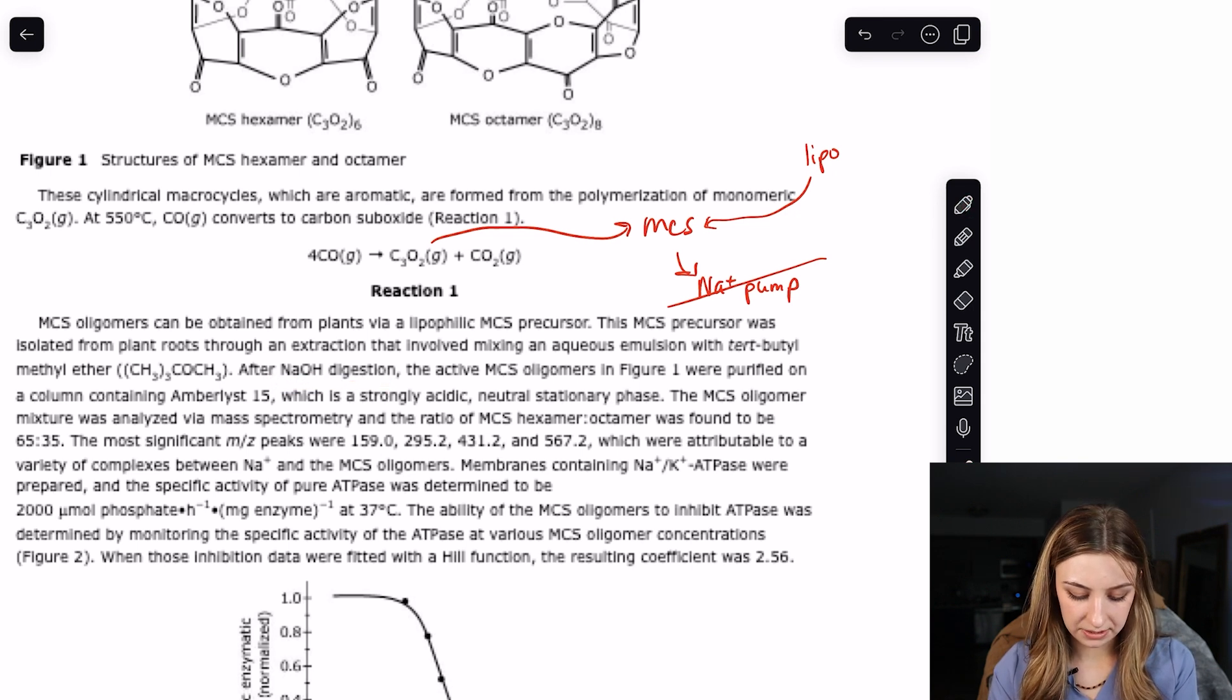After sodium hydroxide digestion, the active MCS oligomers in figure one are purified on a column containing Amberlyst 15, which is a strongly acidic neutral stationary phase. They're talking about chromatography or some kind of separation technique. So this might come back very high likelihood that it'll come back. I'm going to say it's got to be separated. It says the MCS oligomer mixture was analyzed via mass spec. And the ratio of MCS hexamer and octamer was found to be 65 to 35.